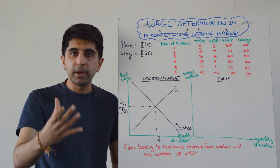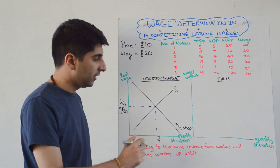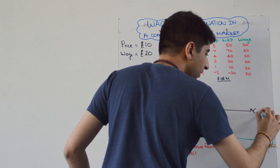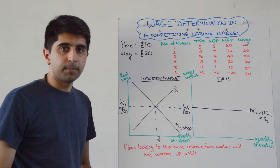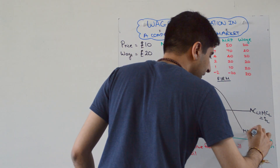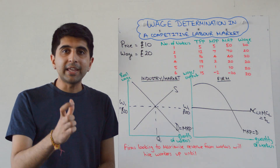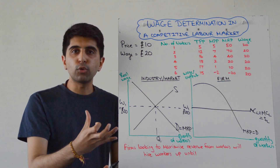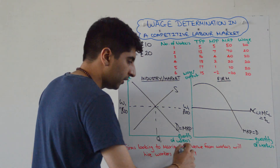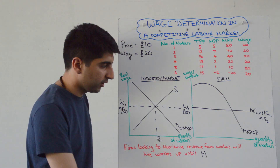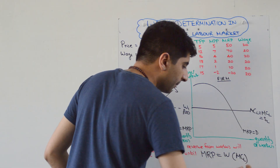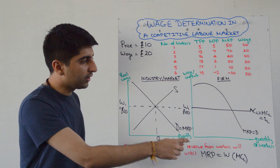For an individual firm — an individual burger restaurant — they have to take the market wage rate W1, which is £20. As we've learnt, that is the average cost of labour, which equals the marginal cost of labour, which is the supply of labour for the individual firm. The demand curve for the individual firm is just the MRP curve. Firms will make efficient employment decisions and hire workers where MRP equals the marginal cost of labour — the condition to maximise revenue from workers.